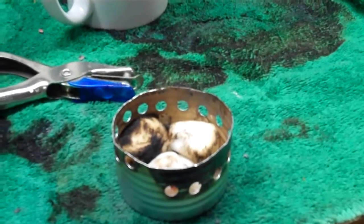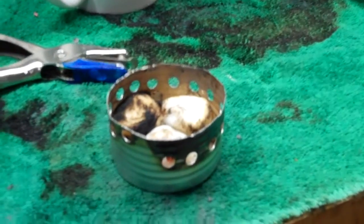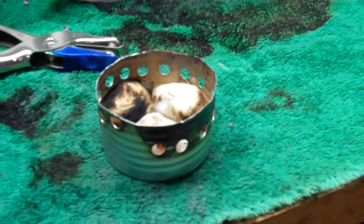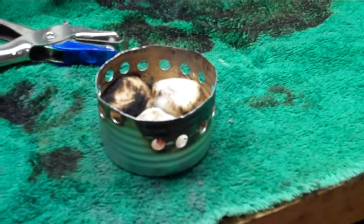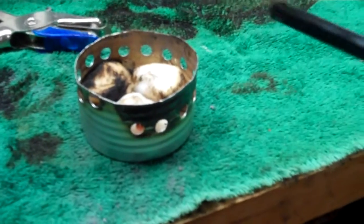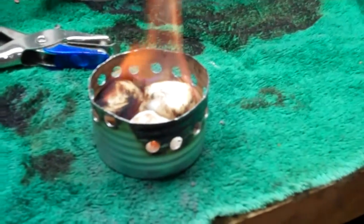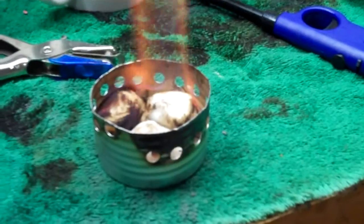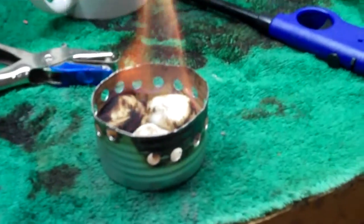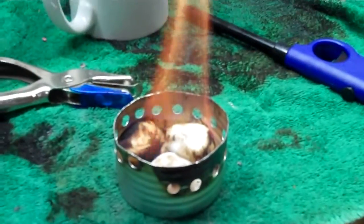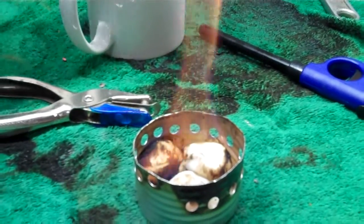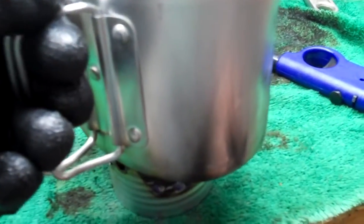So anyway, you put your three cotton balls. It'll work with less, but three seems to fill it up pretty good. Then you just light it, give it a couple seconds to prime, which basically means you got to get the flame nice and hot, and then you put your cup on there.